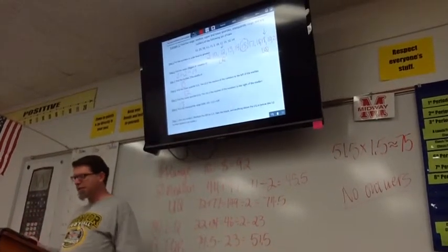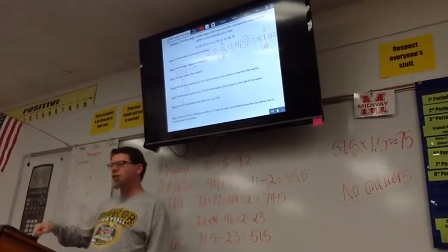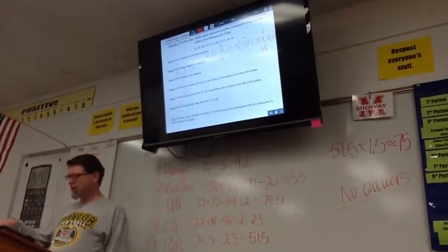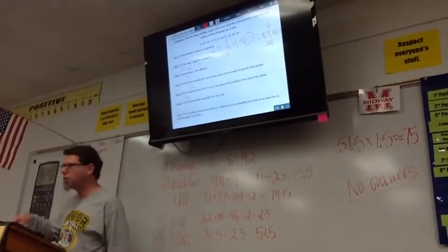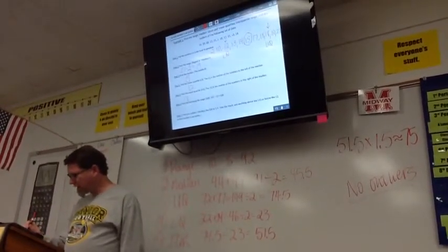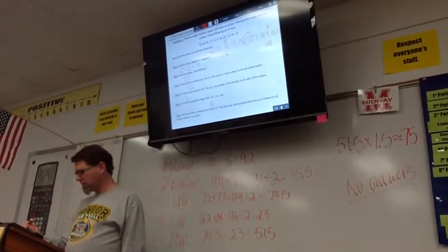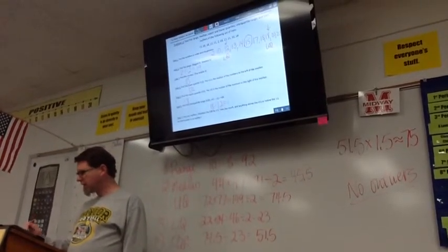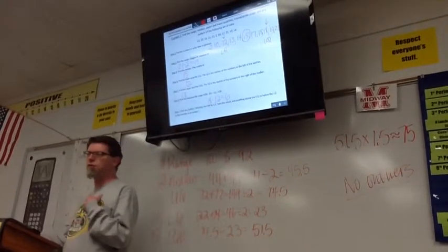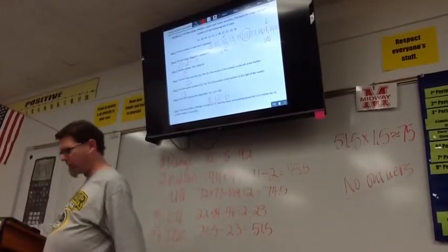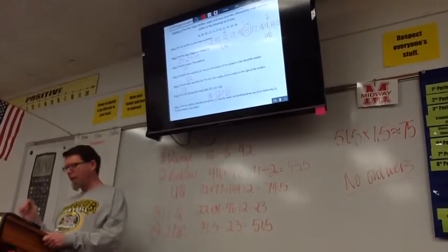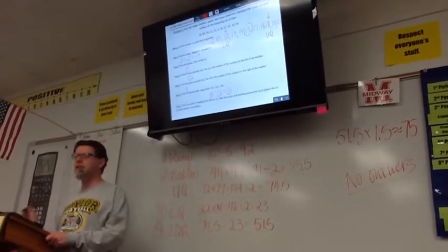Now, number sixteen says we need to find the interquartile range. That is a big word to say subtract the UQ and the LQ. What is the UQ? Eighteen minus what's the LQ? Twelve equals six. So my interquartile range. Repeat that after me, please. Interquartile range. Interquartile range. Great. You sound so sophisticated. Now, we have an interquartile range of six.